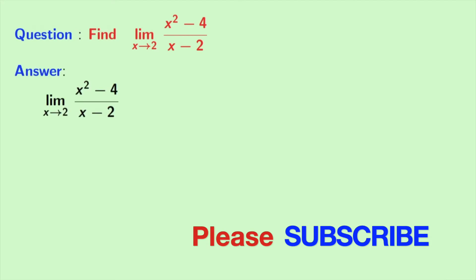Now this is our given limit. Look that we have limit x tends to 2, and if we put x equal to 2 here, we get 2 minus 2, that is 0 in the denominator, and that is undefined. So we cannot put x equal to 2 directly. At first we have to simplify it.